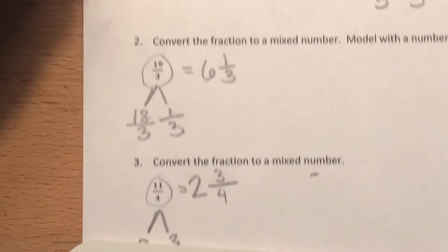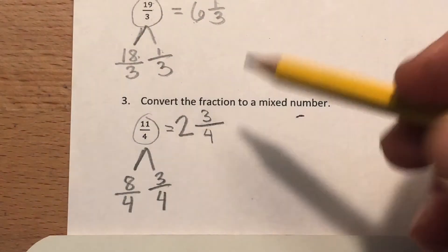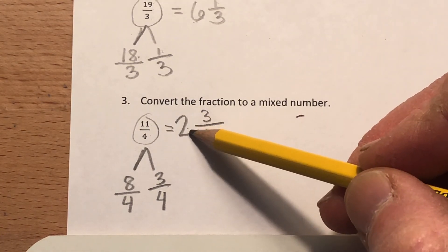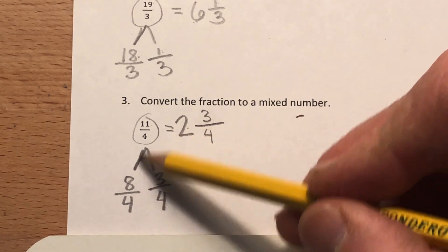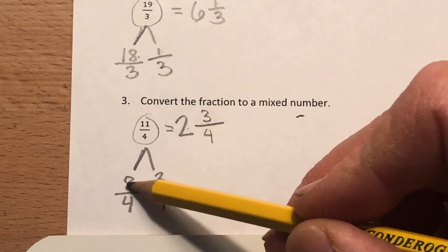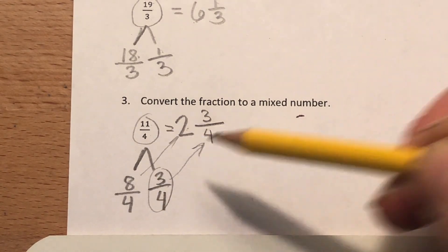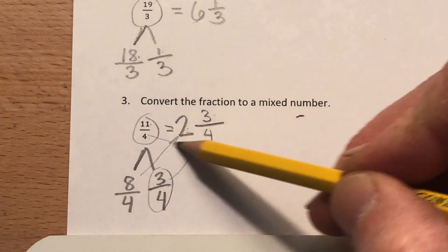Okay. And then finally convert the fraction. Next number is two and three fourths. Four goes into 11, two full times, without going over. So that would be eight fourths here, right? So two would be eight fourths. That's where that comes from. So it'd be three fourths left over. All right. So four goes into 11, two full times with three left over and fourths remain the same.